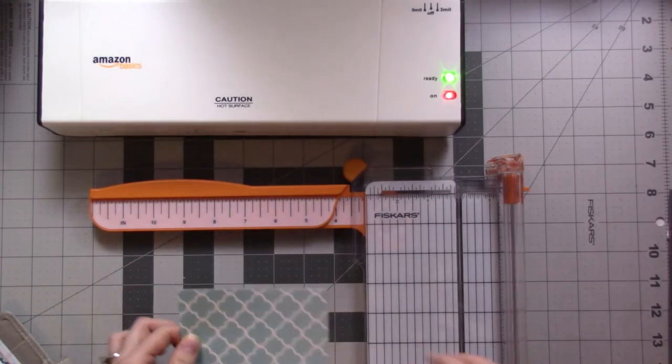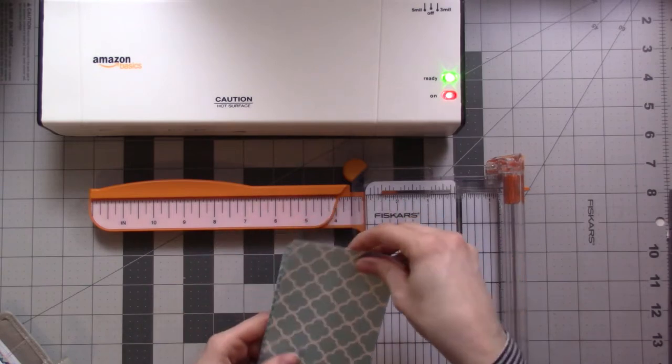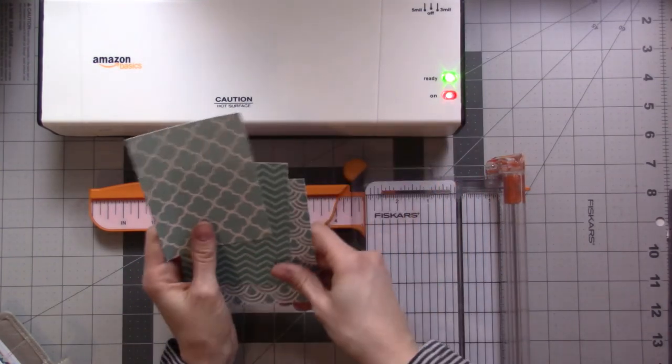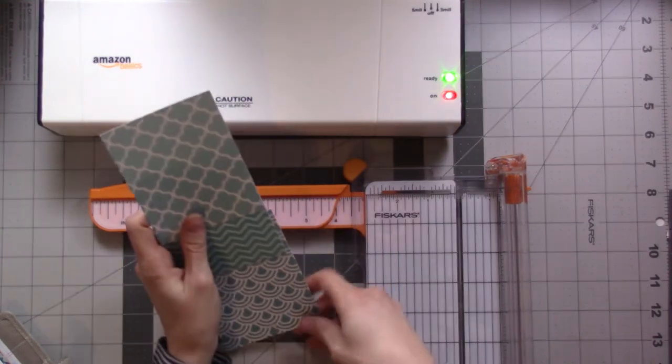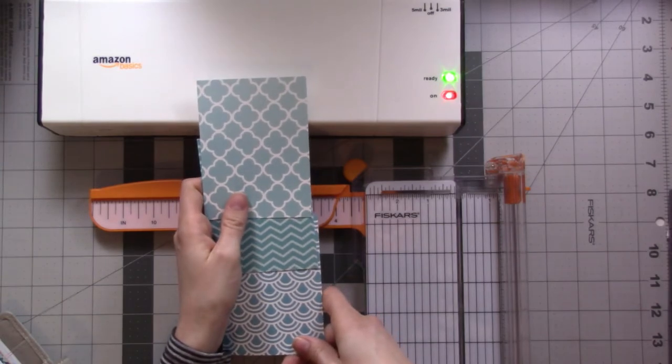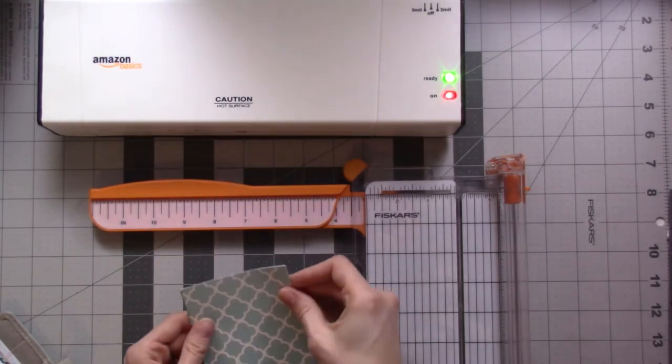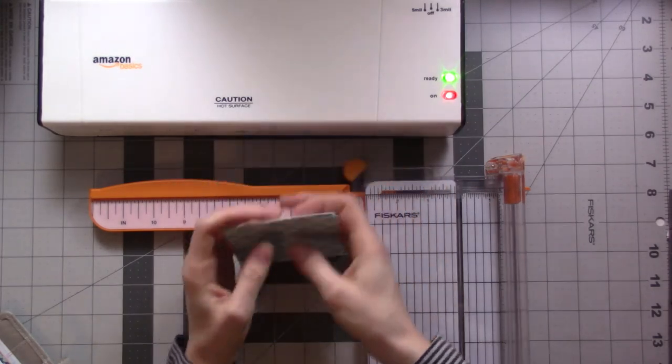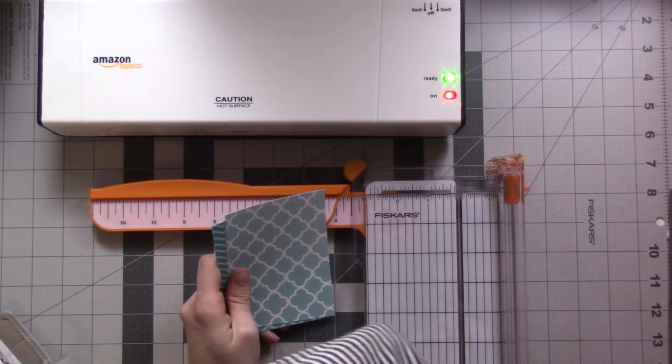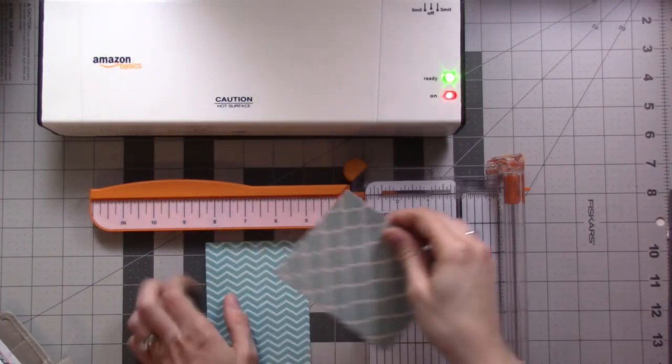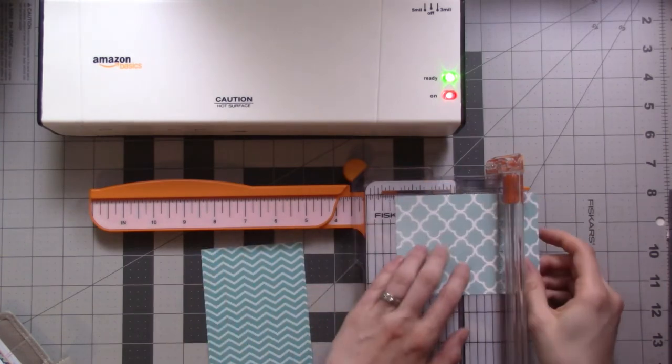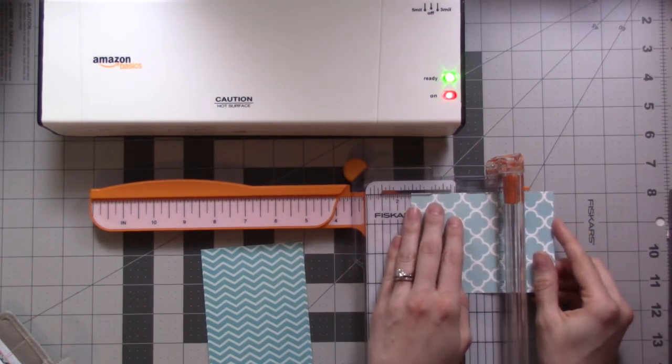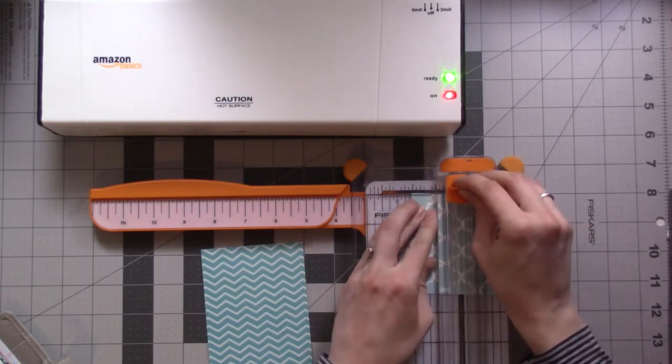And then this is the tricky part, cutting the actual tab. I have to figure out what I want this to be. These three tabs are going to be for my monthly, weekly, daily, so it's just going to be three tabs long. Each of those should be one and nine sixteenths inches.